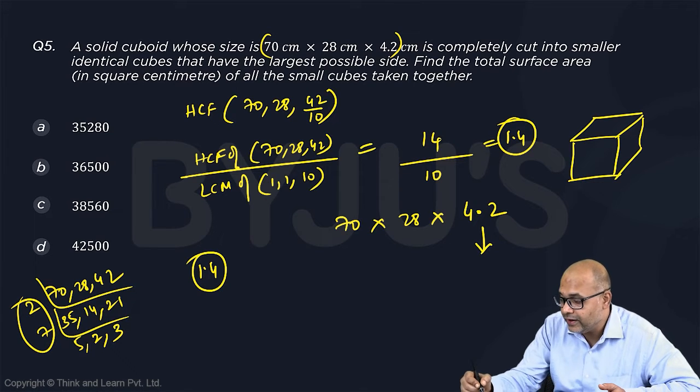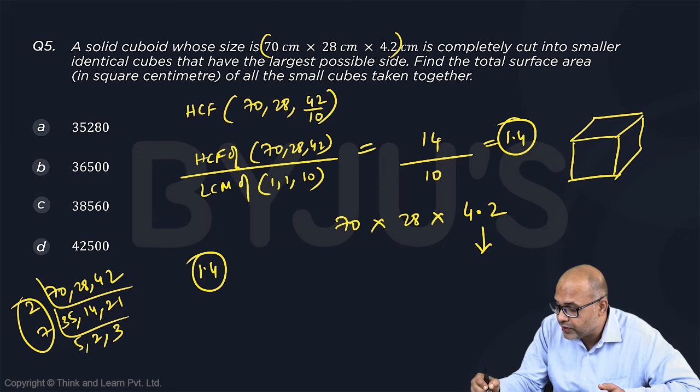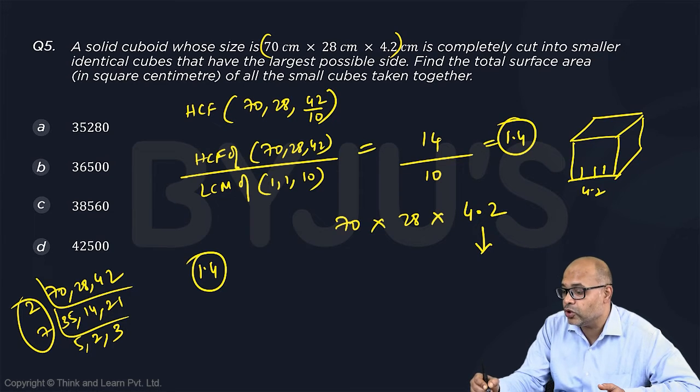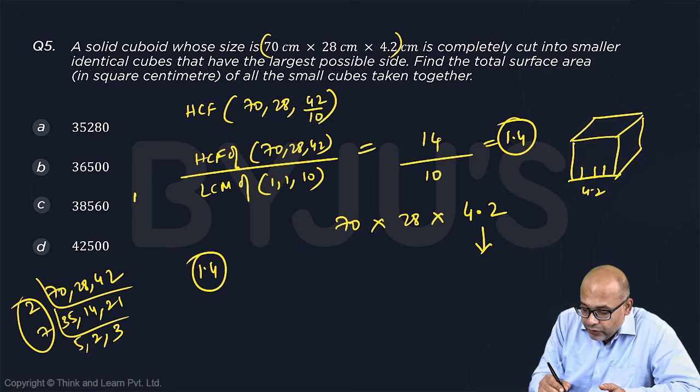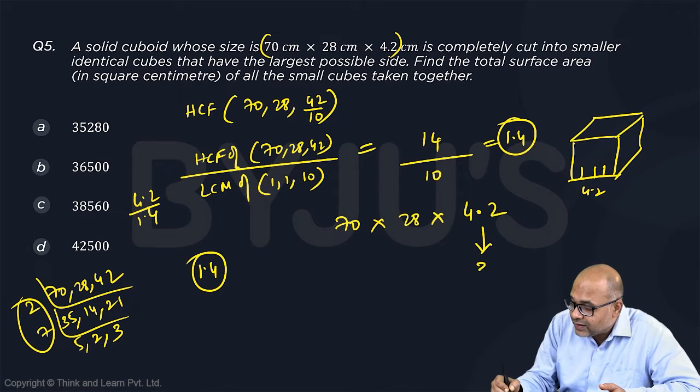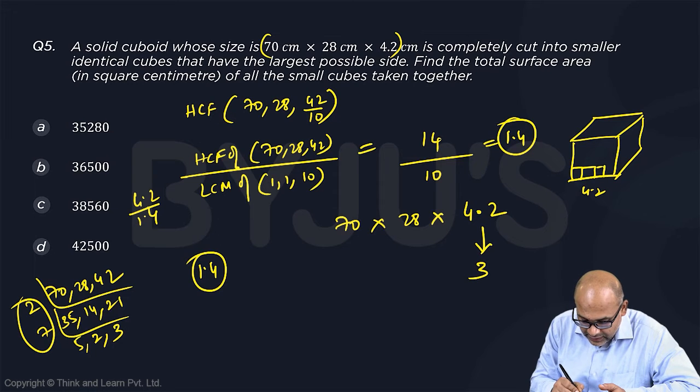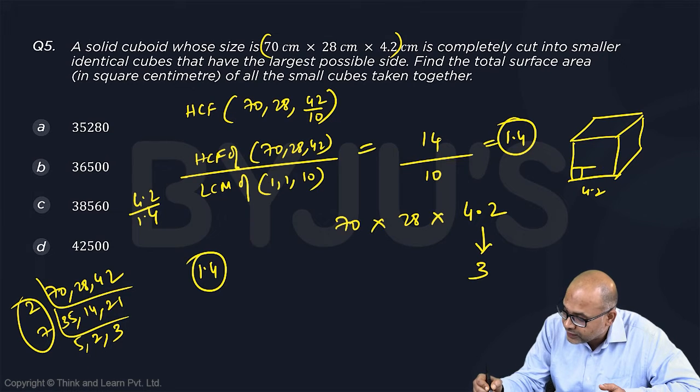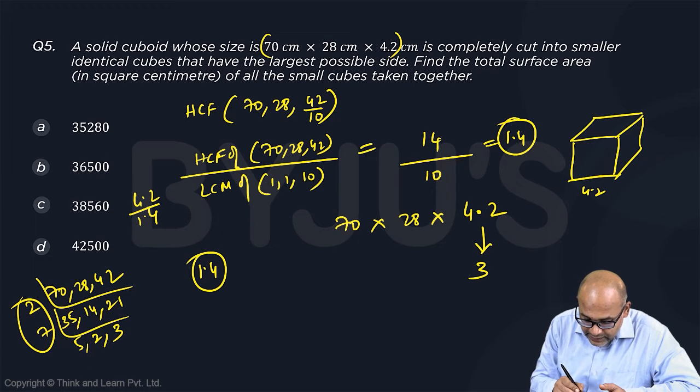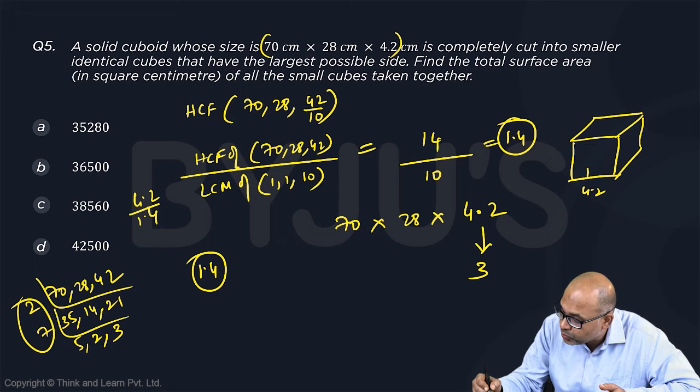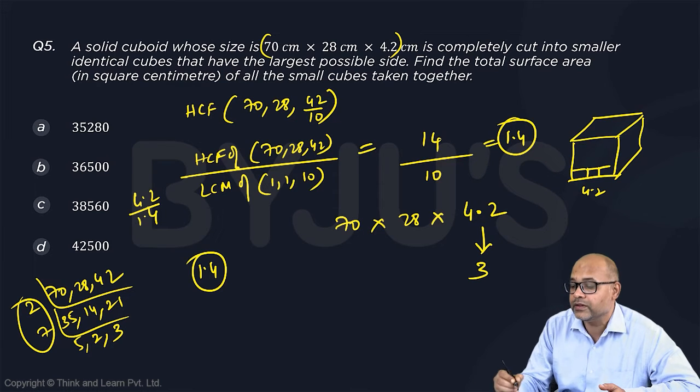It's a cuboid, right? So if this is 4.2, if this is 4.2 and I'm cutting it as 1.4, how many cubes will I get? So you have to divide 4.2 by 1.4. So you'll get 3 such cuts. So 1, 2, 3, that's it. So in fact, this figure is incorrect. You'll just have to draw this correctly. So you'll get one side is 4.2. So you'll be able to make 2 cuts and therefore you'll get 3 such things.